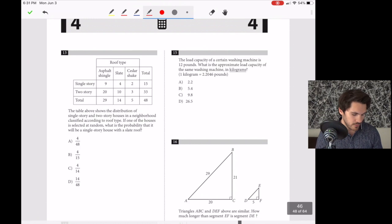Number 13. The table shows the distribution of single story and two story houses classified by rooftop. If one house is selected at random, what is the probability it's a single story house with a slate roof? Probability is desired outcomes over total outcomes. We have 48 houses total. A single story house with slate roof is 4 out of 48. That's answer choice A.